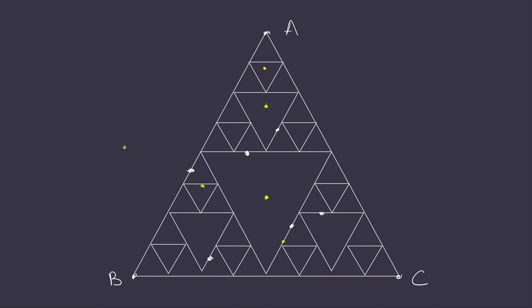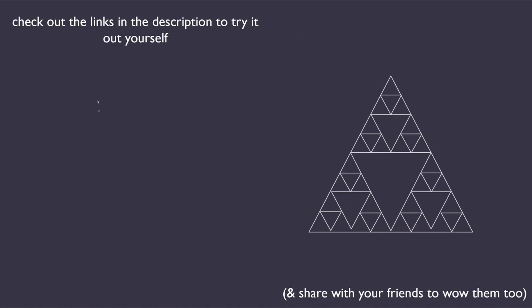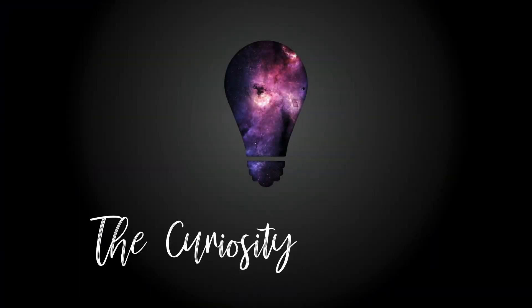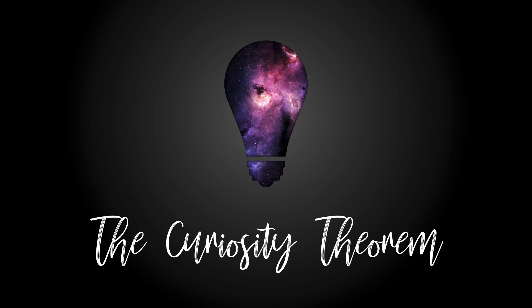I coded an interactive simulation and it's available on my GitHub — the link is in the description below. You can choose the coordinates of the triangle as well as the starting position of the chaos game. And there you have it — another simple thing to increase your fascination for the world of math. Thank you for watching, and don't forget to like, subscribe, and share.